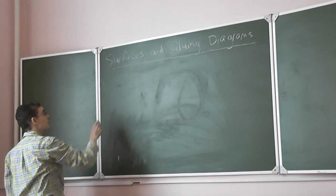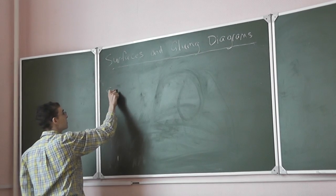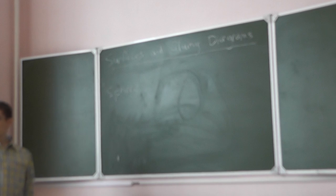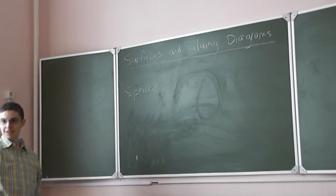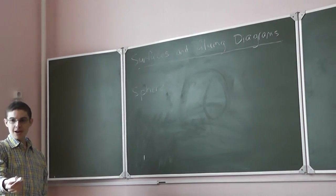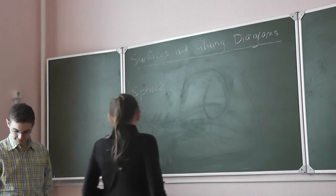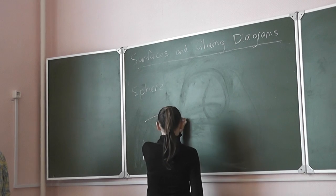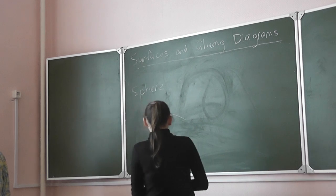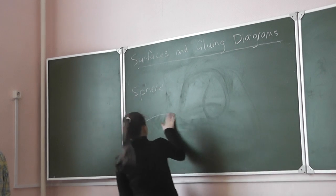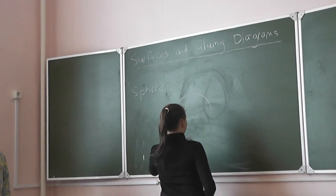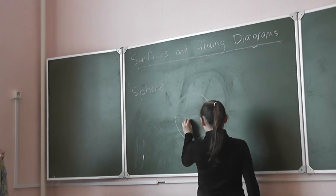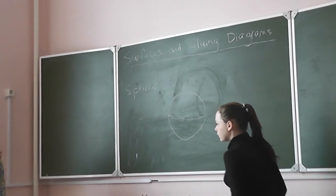One surface that we looked at was a sphere. I'd like someone to come up and draw me a sphere. Eva, could you draw a sphere with the equator and give it a three-dimensional look? Excellent — there's a sphere. Thank you, Eva.